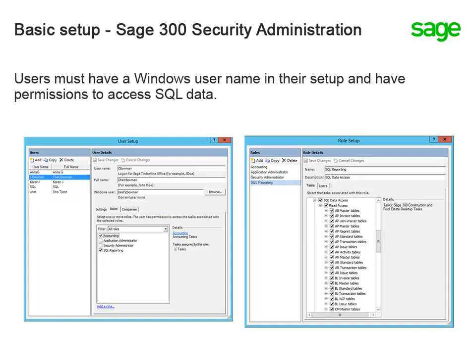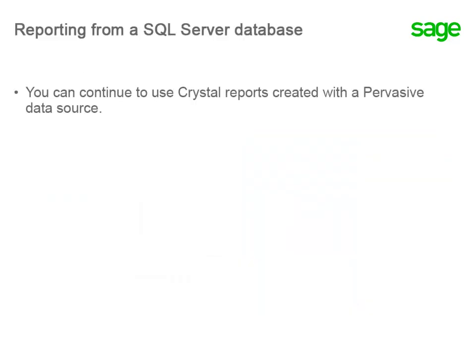For anyone writing reports or using reports that access the information from your SQL Server database, their 300 CRE user setup must have a Windows user name, and the user must have a role that has task permissions to SQL data access. The Crystal Reports that you're currently using with your Pervasive data will also work with SQL data, so there's no need to recreate them.